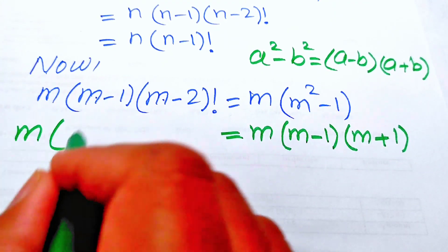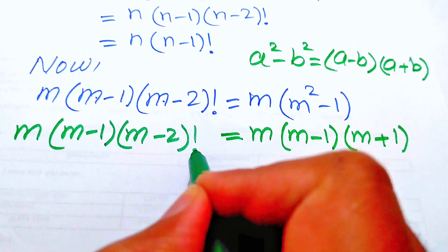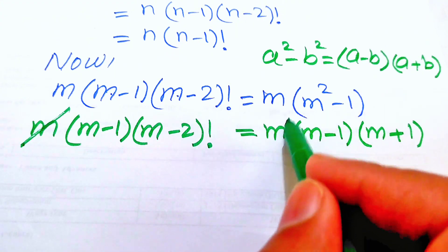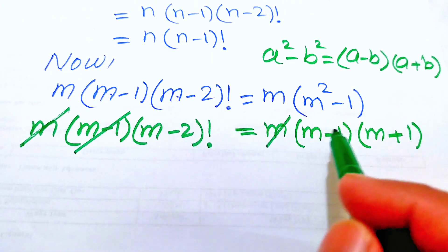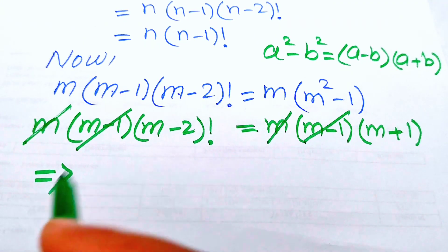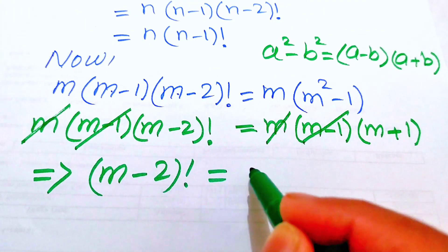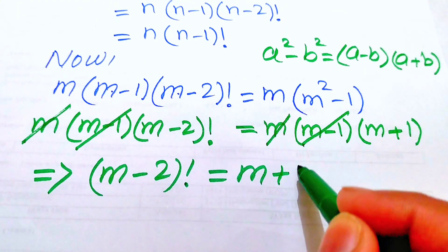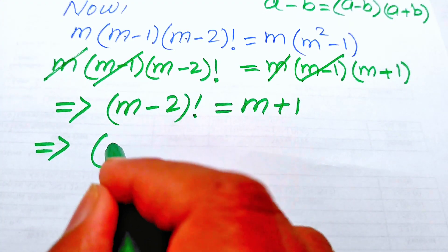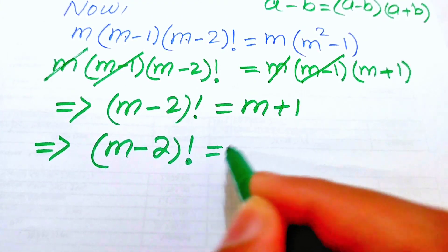Focusing on both sides, the m cancels and the (m minus 1) cancels. This equation implies that (m minus 2) factorial equals (m plus 1).